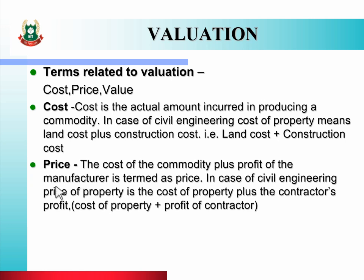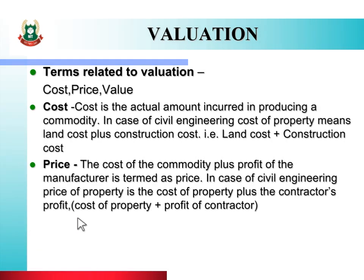Next is price. The cost of the commodity plus profit of the manufacturer is termed as price. In civil engineering, price of property is the cost of property plus the contractor's profit. Price means the cost of the product plus the profit of the maker, and in civil engineering it means cost of property plus profit of contractor.